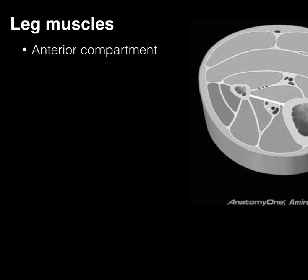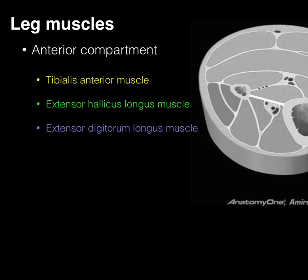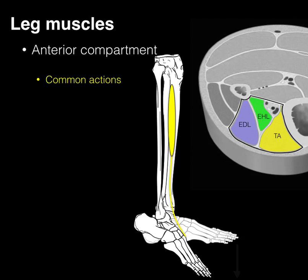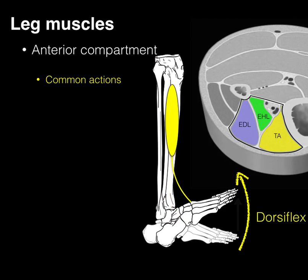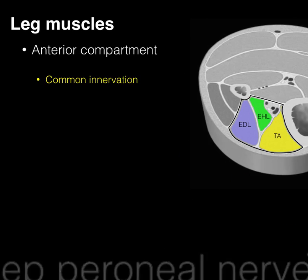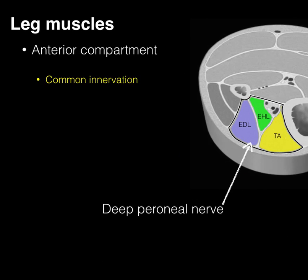In review of our anterior compartment leg muscles, there are three muscles that correspond in this axial section, color coded. The nice thing about learning muscles in compartments is that there are things in common, such as common actions. All three of these muscles are going to cross the front of the tibiotalar joint vertically and help with dorsiflexion. Also, all these muscles are innervated by the deep peroneal nerve.